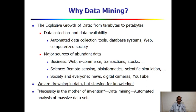For data collection and availability, we use automated data collection tools to process such data. Before data mining we processed data using database systems and web and computerized society. The major sources of this data are business applications like web, e-commerce, transactions, stocks, science applications like remote sensing, bioinformatics, and scientific simulation. Society also generates data through digital cameras, YouTube videos, Facebook, and WhatsApp — every day we are generating huge amounts of data.